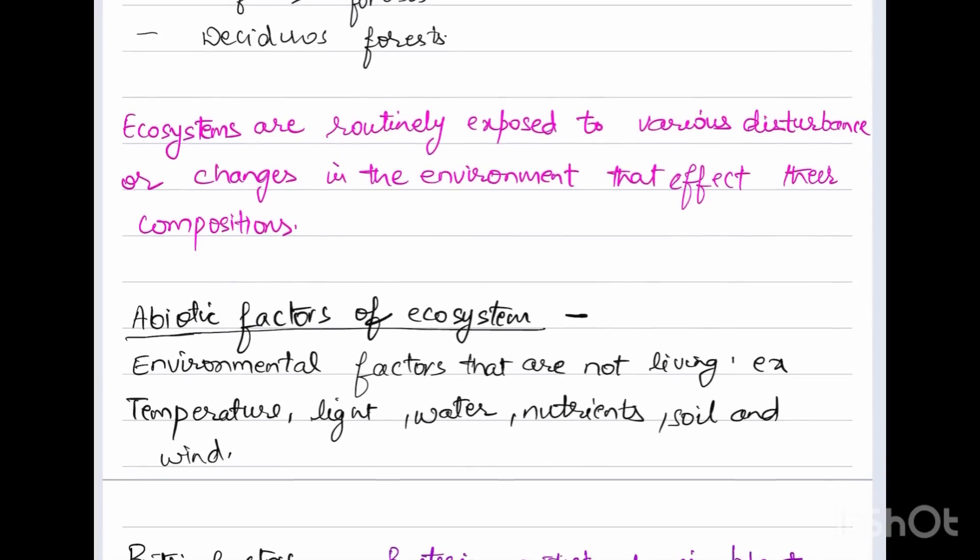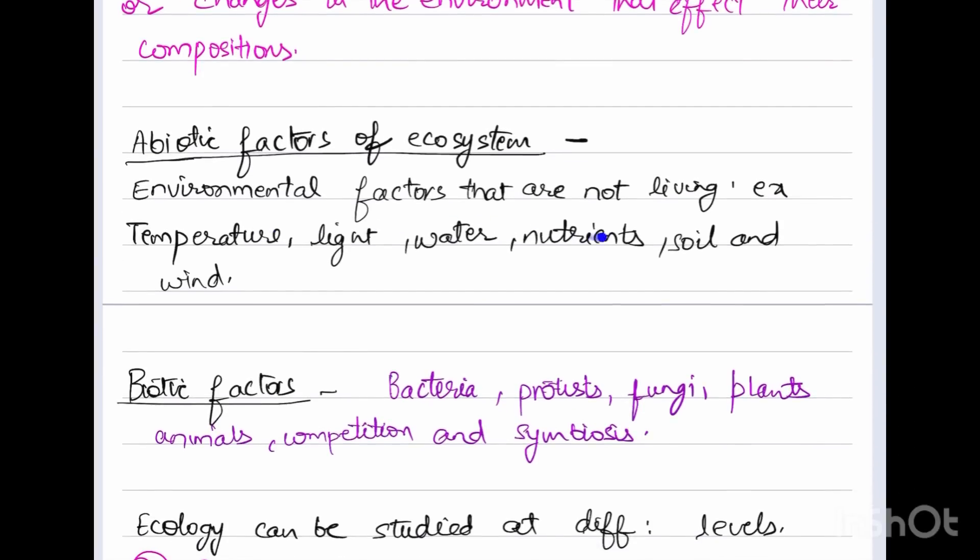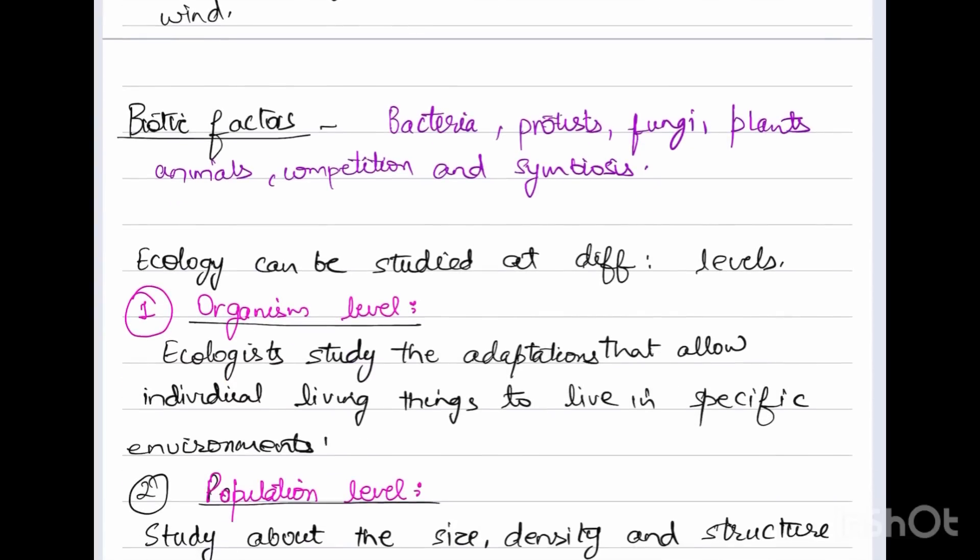Ecosystems are routinely exposed to various disturbances or changes in the environment that affect their compositions. The abiotic factors of the ecosystem are environmental factors that are not living, for example temperature, light, water, nutrients, soil, and wind. Biotic factors are the living organisms like bacteria, protists, fungi, plants, and animals, along with competition and symbiosis.